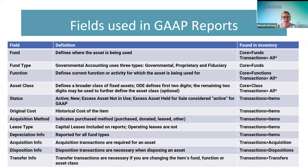A lot of people have questions about what is involved in the GAAP reports — what's getting pulled in and what to report. I have a table here of the different fields, their definitions, and where they're coming from in the application. These all play a part in what's being pulled into the GAAP reports.